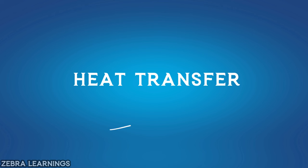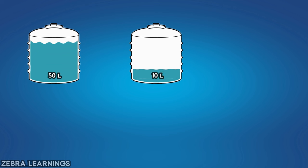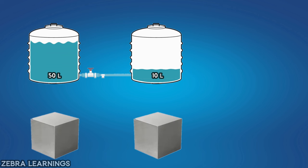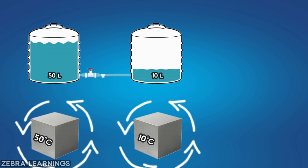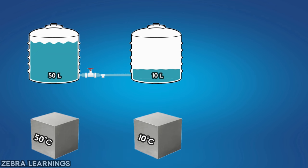This will be helpful for understanding this video. Let's take a tank with 50 liters of water and another tank with 10 liters of water. Let's connect these two tanks with a pipe. Let's also take two objects — one at 50 degrees Celsius and the other at 10 degrees Celsius. We do not need to consider the temperature around the objects. Now, let's open the valve on the pipe that connects the two tanks.